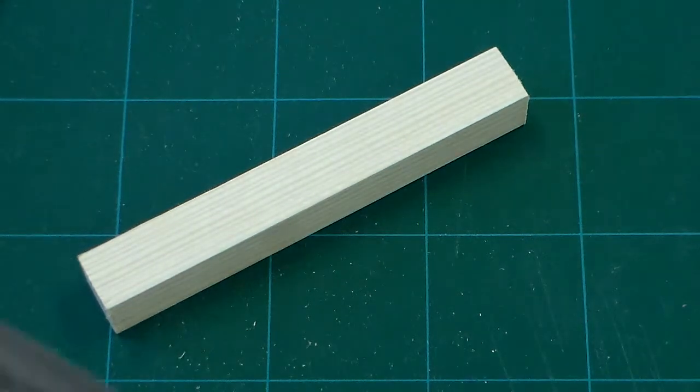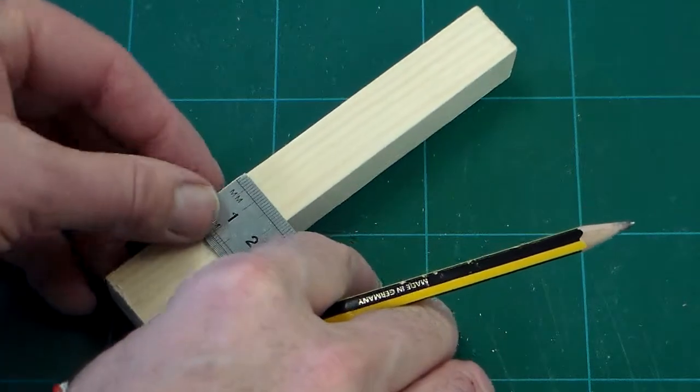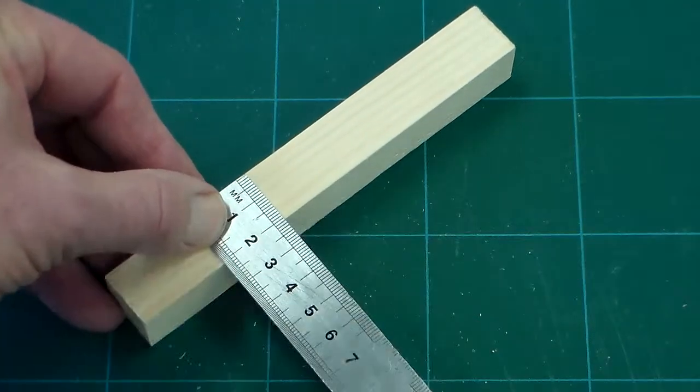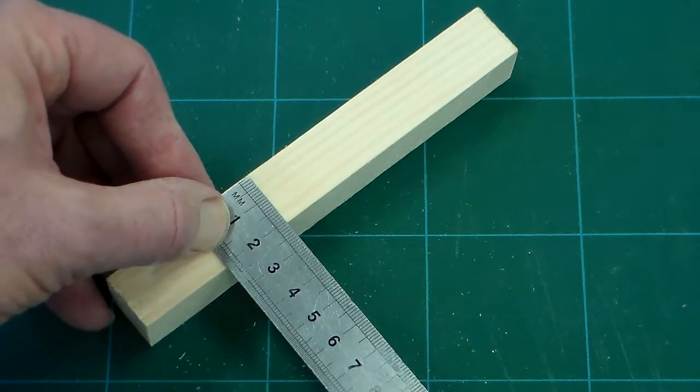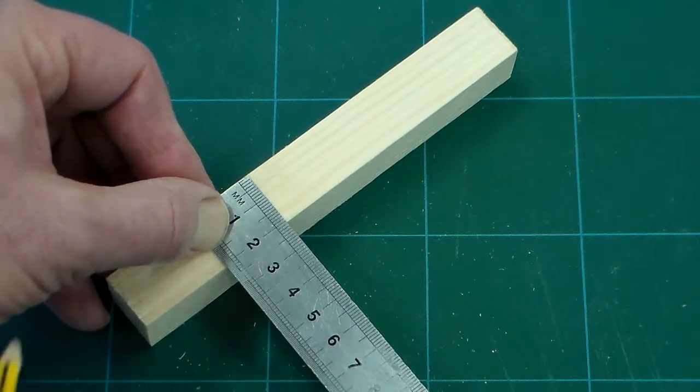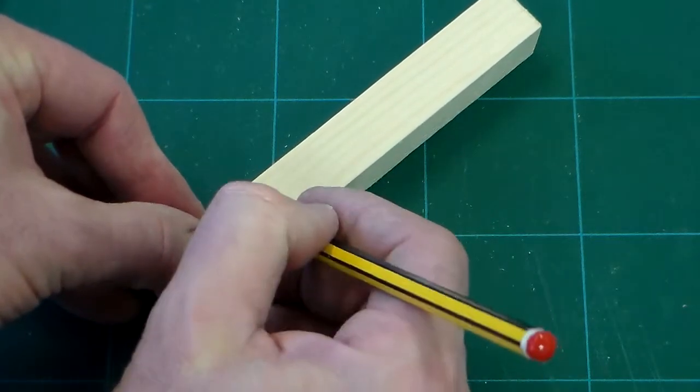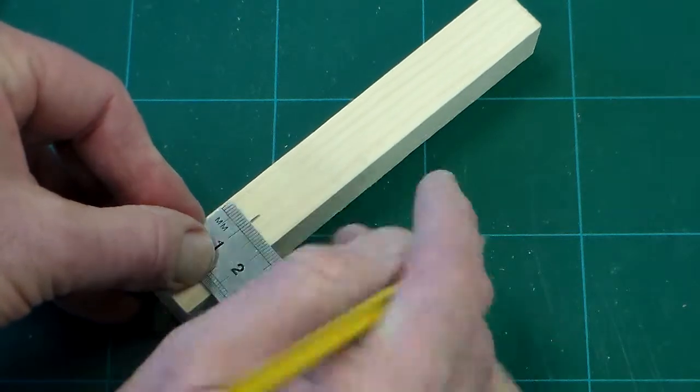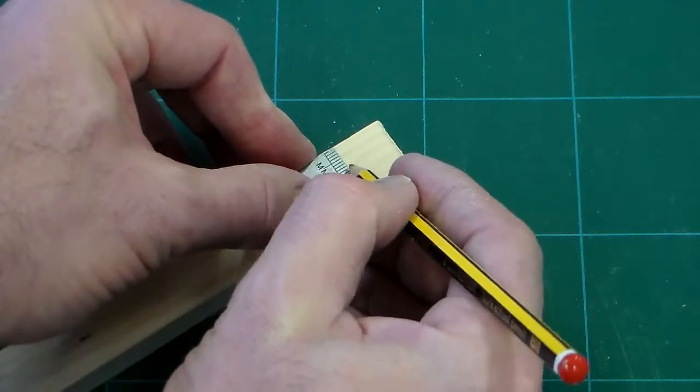The first thing we need is a steel ruler. We're going to take the piece of wood and we can see the wood is 20mm wide. So we need to mark it halfway which is just here at 10mm. We mark it there and then we go to the far end of the piece of wood and mark it also.